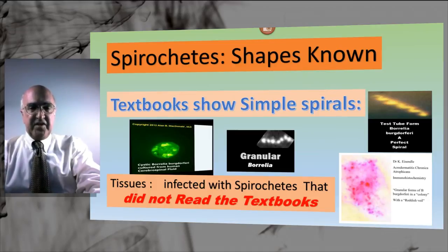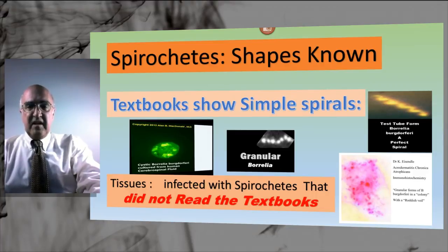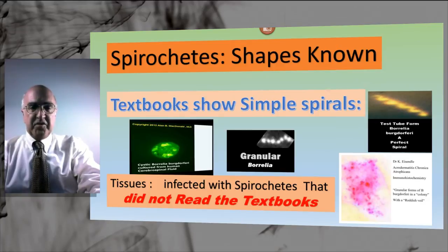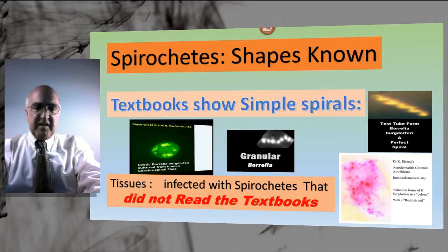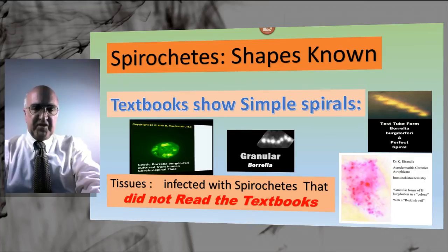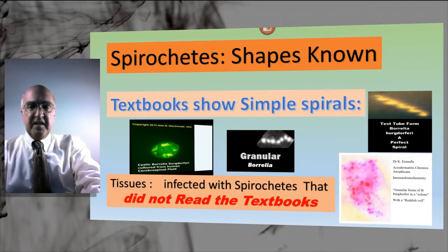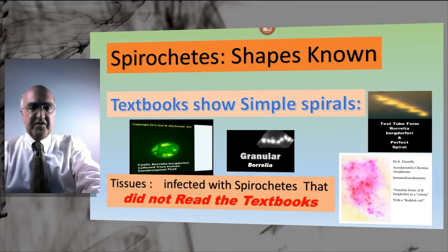Spirochetes when they infect tissue are not always the corkscrew-shaped form — they may show up as rounded forms, or as granules, or as colonies. Spirochetes do not read the textbooks, so in spite of what the textbooks say, spirochetes may exist in rounded forms, granule forms, and biofilm forms.